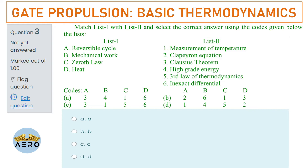Measurements of temperature falls under the zeroth law, so C is equivalent to 1. Looking at the options, we can see either A or B. For the reverse cycle, it represents the Clausius theorem, so A maps to 3. Therefore the right option is option A.